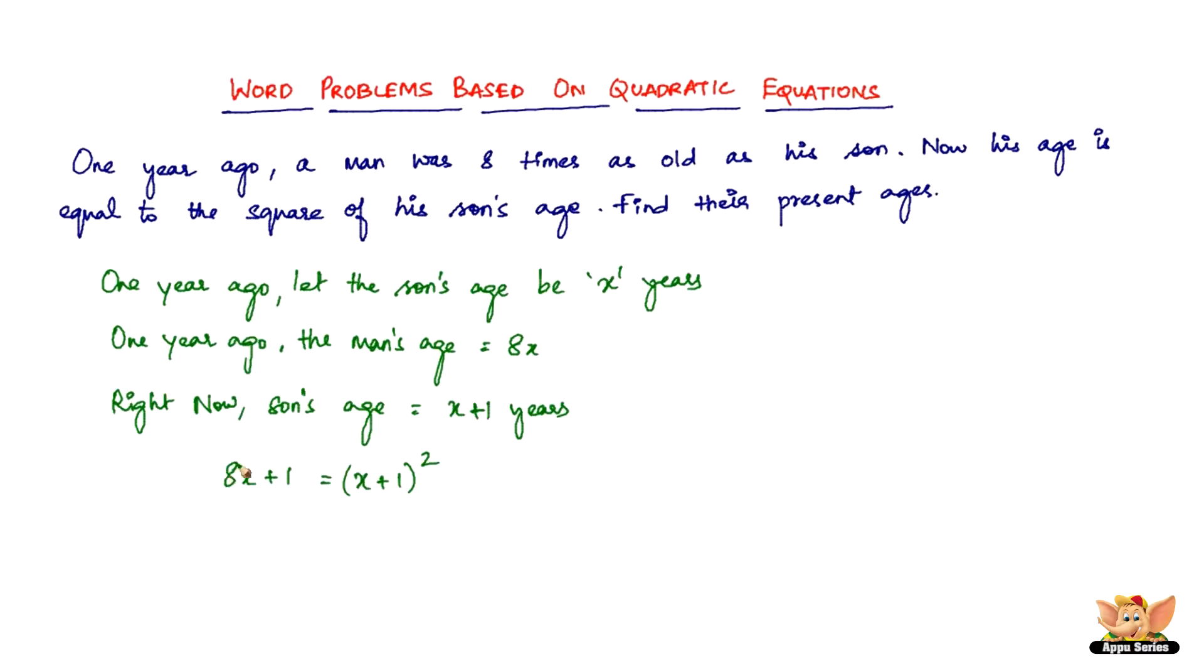All you have to do is expand and solve this. We've got 8X+1 = X²+2X+1. So we have X²+2X+1-8X-1 = 0. The +1 and -1 get cancelled.